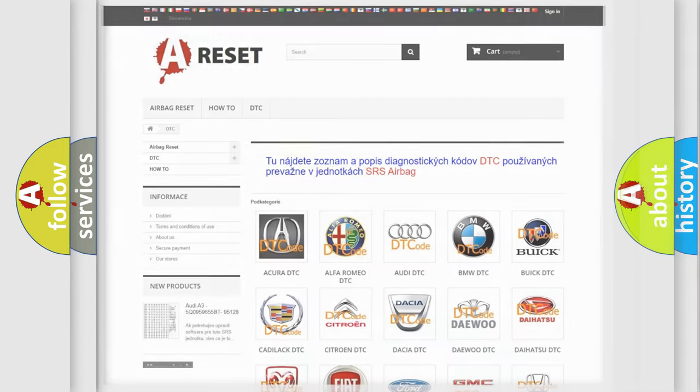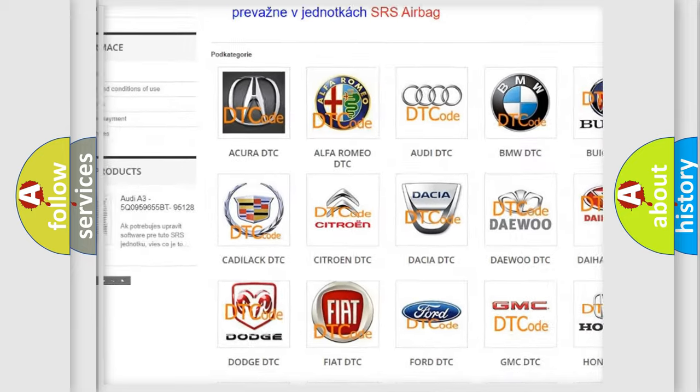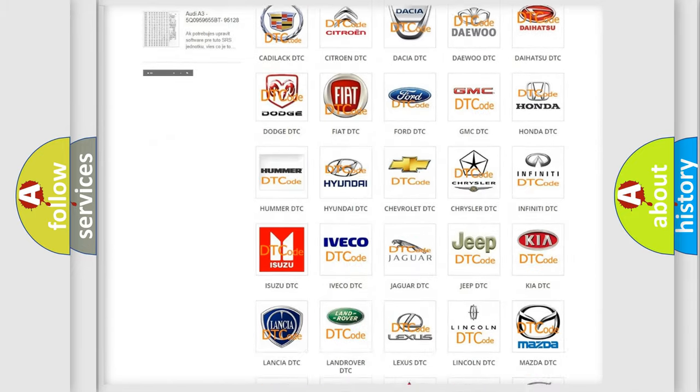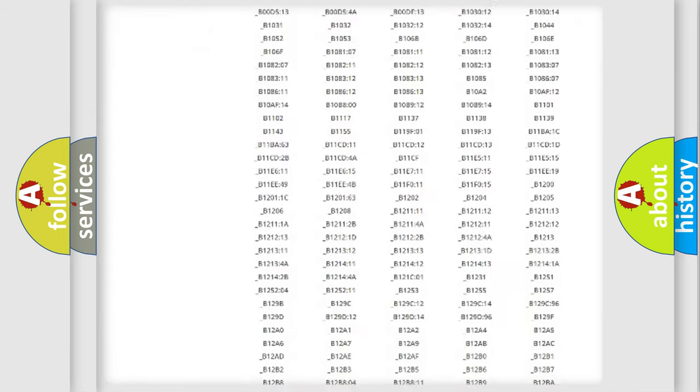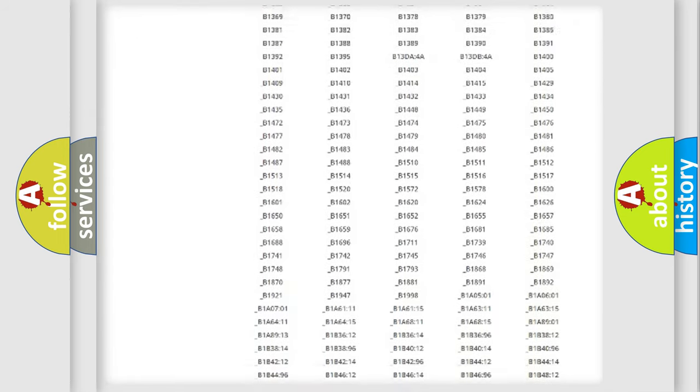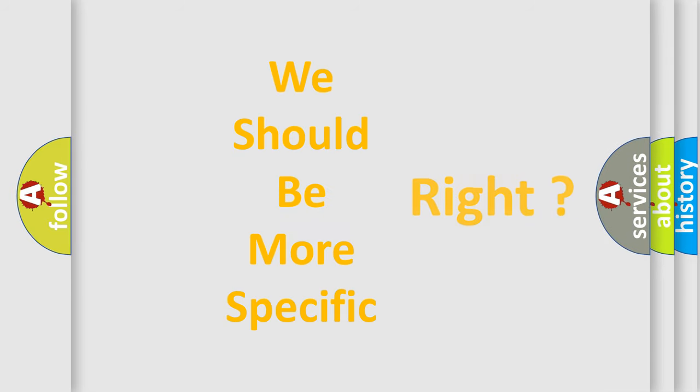Our website airbagreset.sk produces useful videos for you. You do not have to go through the OBD2 protocol anymore to know how to troubleshoot any car breakdown. You will find all the diagnostic codes that can be diagnosed in Volkswagen vehicles, and many other useful things. The following demonstration will help you look into the world of software for car control units.